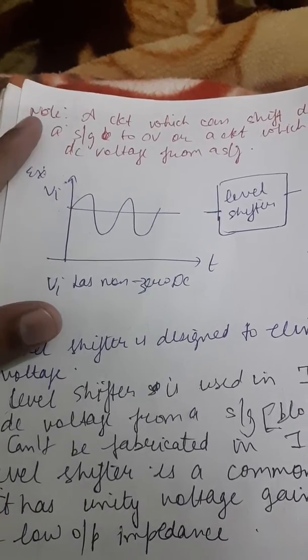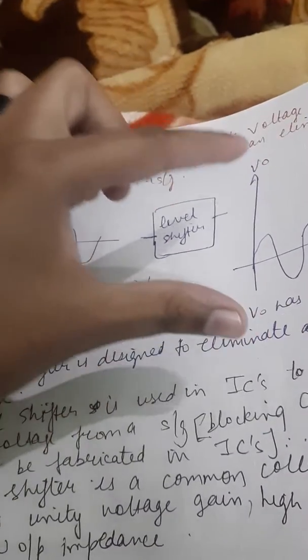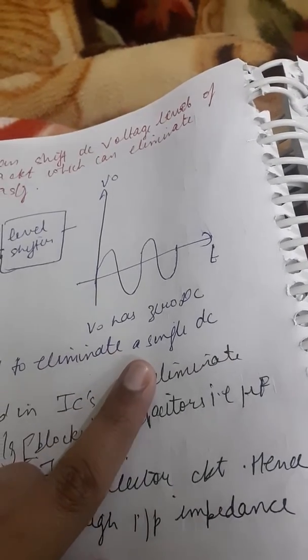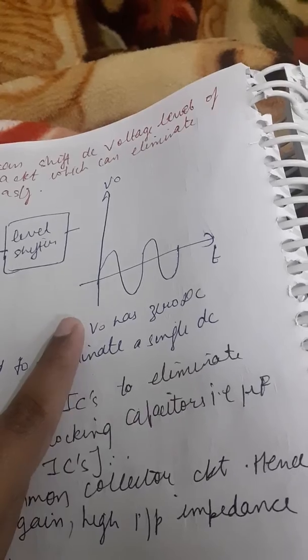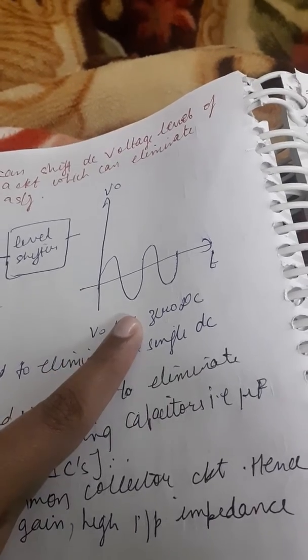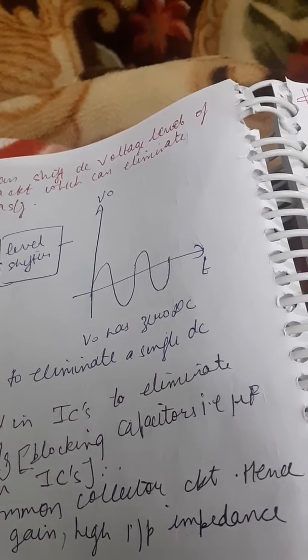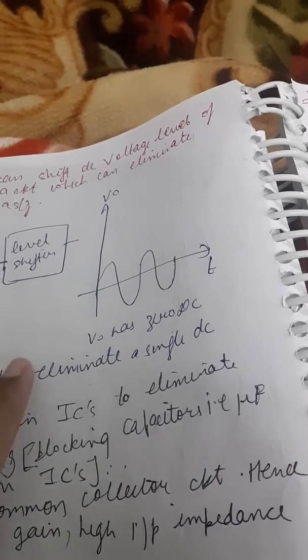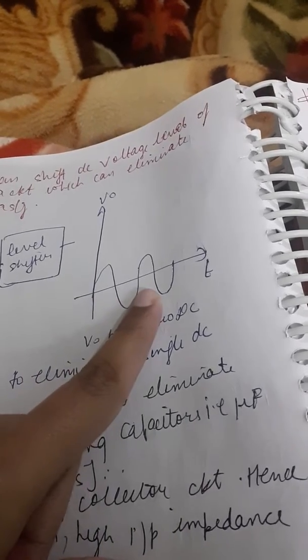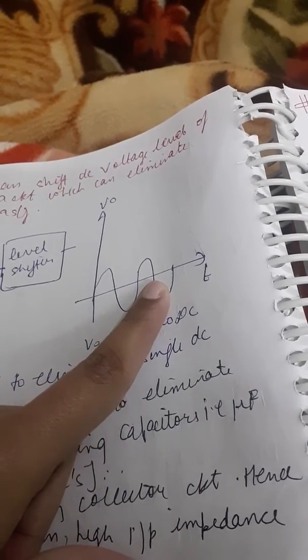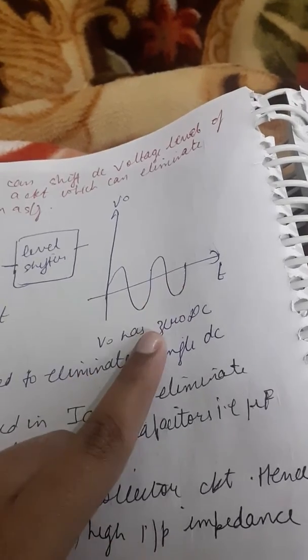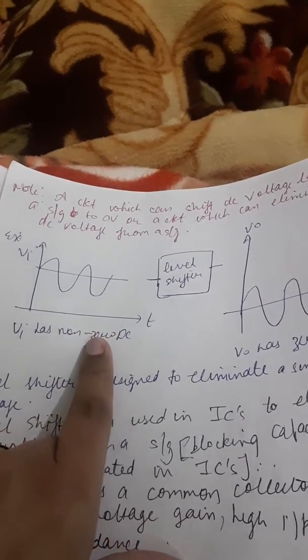When you pass this from level shifter, what are we getting? We are getting this output which has no DC value, zero DC value, as it is starting from average value. Total value zero. How much positive, how much negative is there? They cancel each other, net it is zero. Zero DC value is there. Reference value is zero here. So what level shifter is doing? It is removing the DC value from the input.